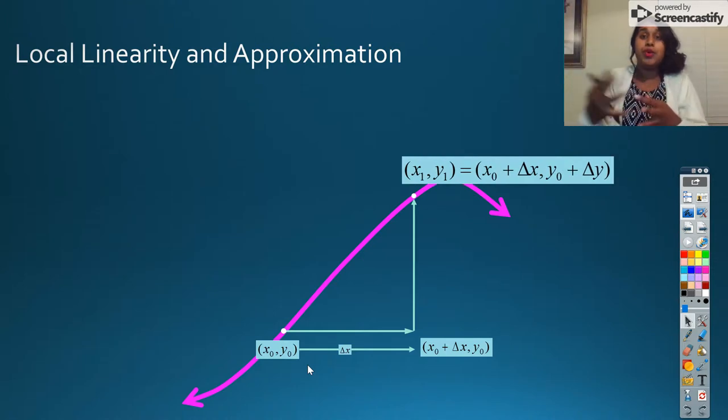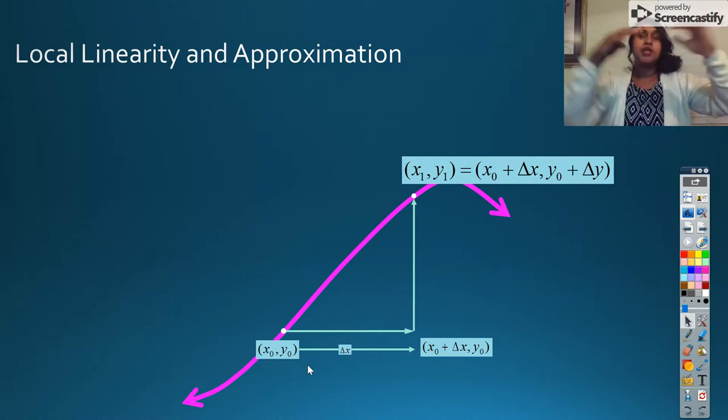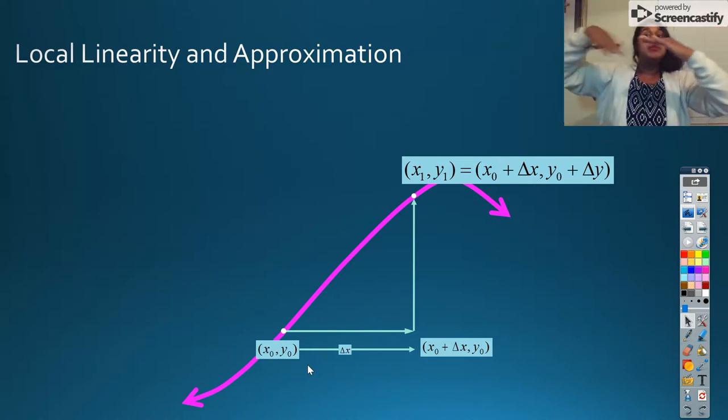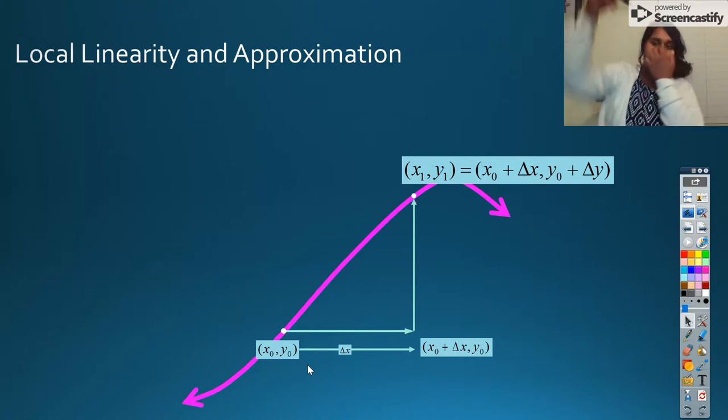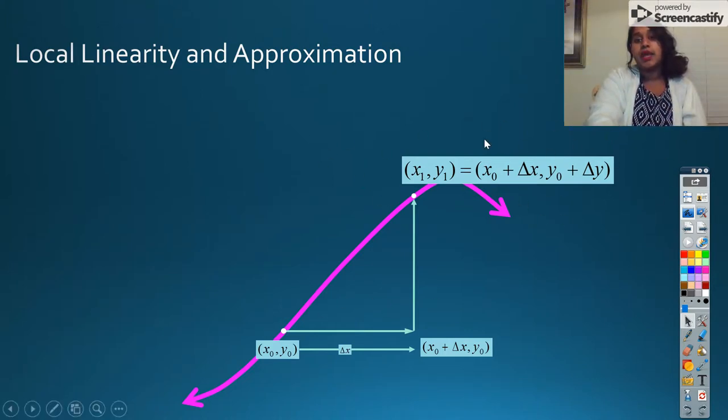And we can do the same exact thing if we're talking about the Y. So we get two new points if we talk about X1 and Y1. If I move my X over, that's going to be the original X value plus that change. If I move that Y over, it's going to be the original Y value plus that change. So that's where these formulas came from for that X1, Y1.